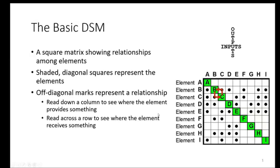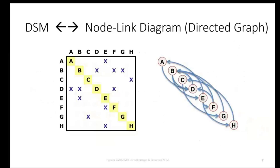So the shaded diagonal squares represent the elements, off-diagonal marks represent relationships, and this is but one convention for reading and writing a DSM. But we'll stick with it for consistency. And note that these relationships can be asymmetric.